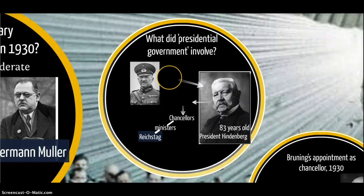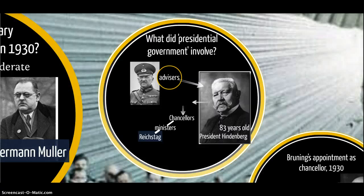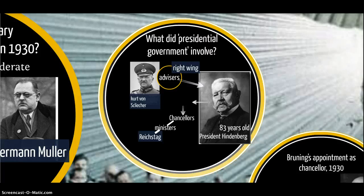President Hindenburg is the president — he's 83 years old, and he was even pulled out of retirement in World War I to fight on the Eastern Front. He starts to rely increasingly on a circle of advisors. Principal among those, and instrumental in the next sequence of events, is General Kurt von Schleicher. These advisors are very right-wing and anti-democratic.